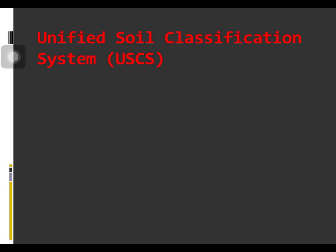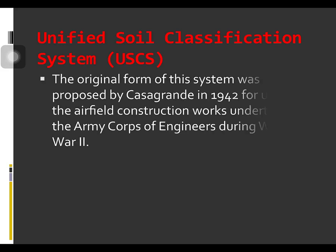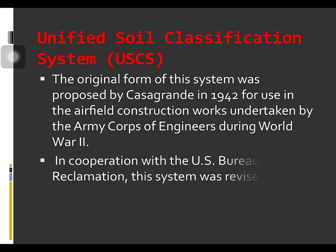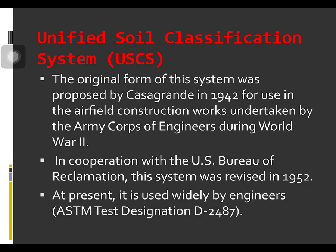So, the Unified Soil Classification System or USCS. The original form of this system was proposed by Casagrande in 1942 for use in the airfield construction works undertaken by the Army Corps of Engineers during World War II. In cooperation with the U.S. Bureau of Reclamation, this system was revised in 1952. At present, it is used widely by engineers under the ASTM test designation D2487.